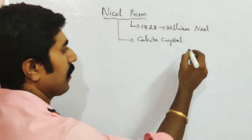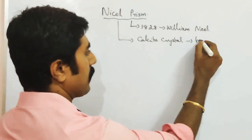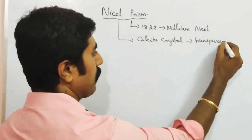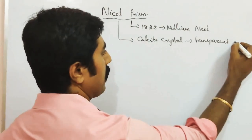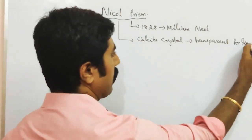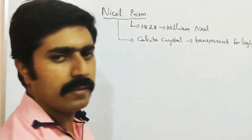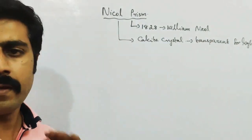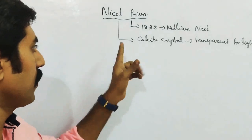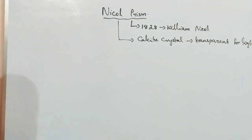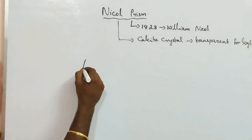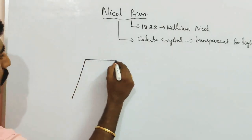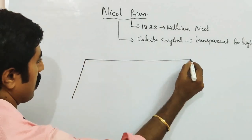Calcite crystal is a transparent material for light. So light passes through it as a transparent material. The object is made up of a calcite crystal. See, this is the calcite crystal.